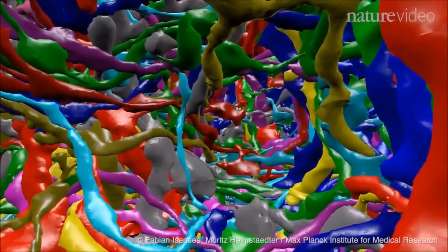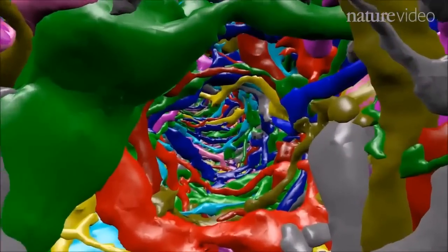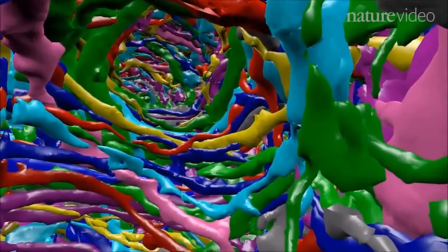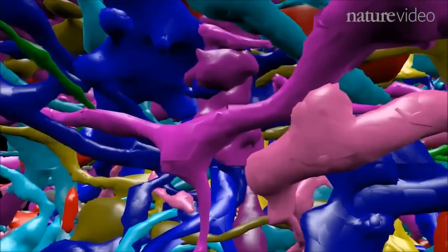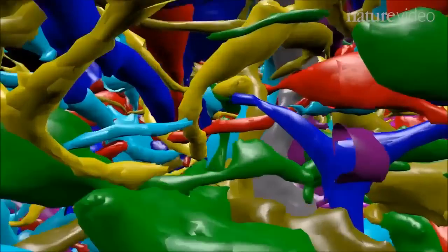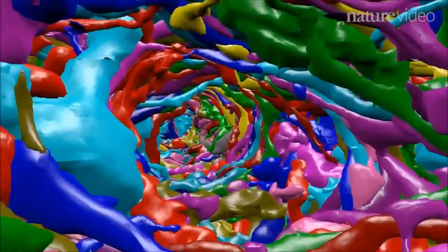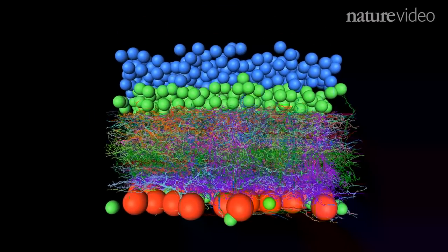We're traveling through a mouse's brain. Each color represents the branches of a different nerve cell. Right now we're in the space normally occupied by a blood vessel, but diving into the thick tangle of nerve branches, you can see how dense and complicated the anatomy is.